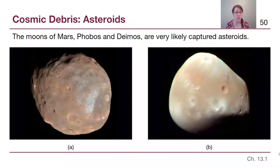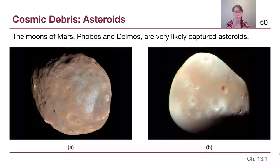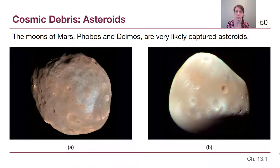Because Mars is right next to the asteroid belt, when we look at Phobos and Deimos — the two small moons of Mars — we recognize they are probably captured asteroids. They didn't form with the planet Mars, but eventually found themselves in stable orbits around Mars as things moved around in the early Solar System.